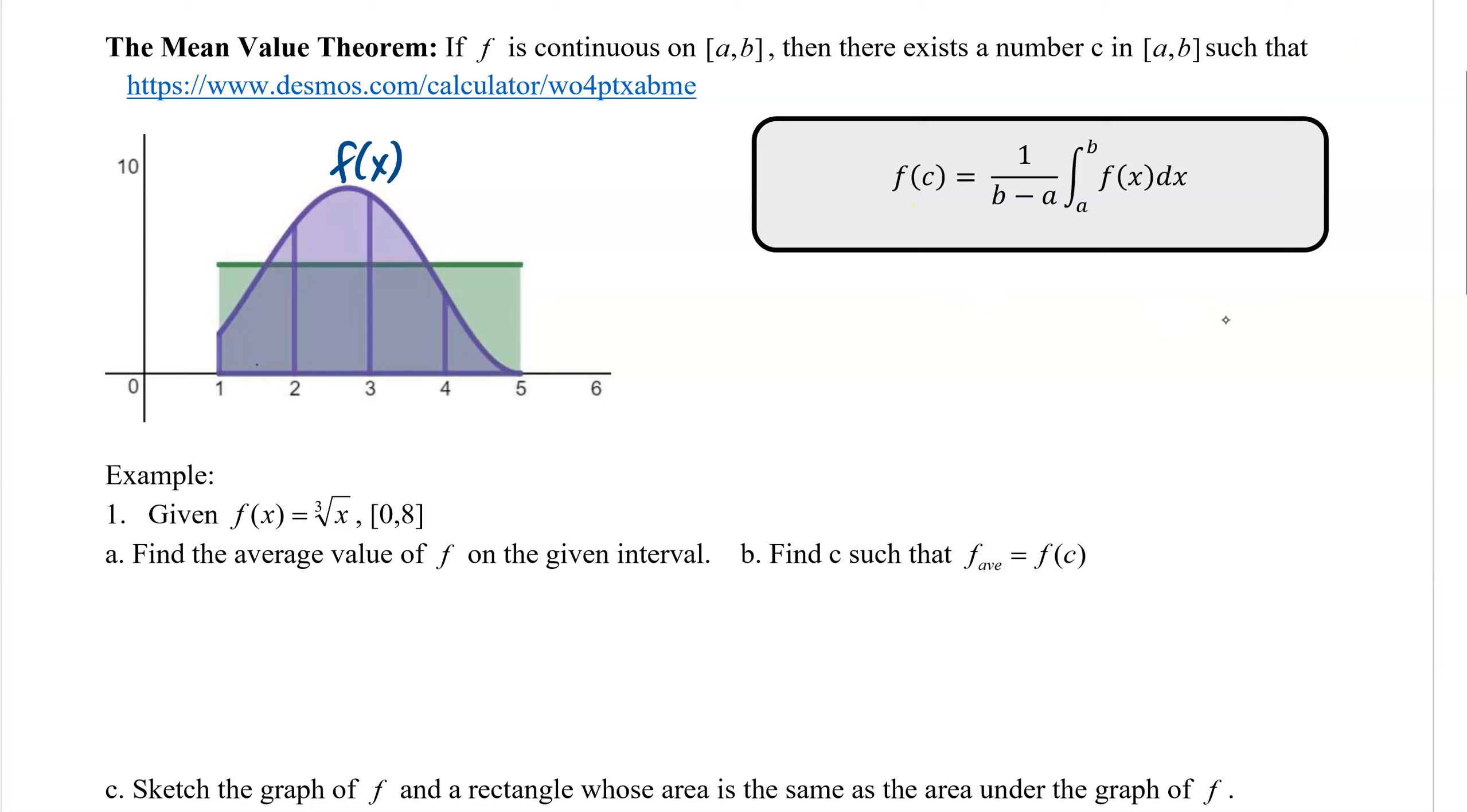All that's basically saying is that there has to be some c value here that would give us an f(c) equal to the average value, and that's what our green is. The green is our average value. We have actually two here. I'm going to call this one c2, right there and right there.